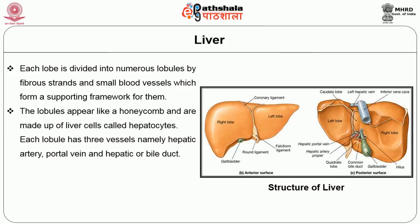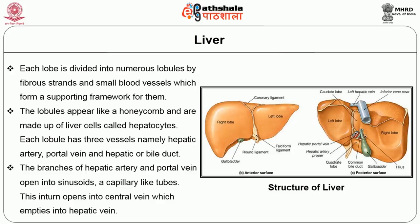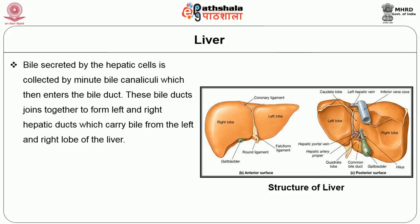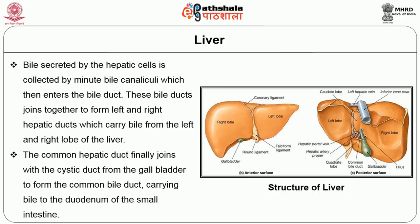The lobules appear like a honeycomb and are made up of liver cells called hepatocytes. Each lobule has three vessels: the hepatic artery, portal vein, and hepatic or bile duct. The branches of the hepatic artery and portal vein open into sinusoid capillary-like tubes, which in turn open into the central vein, which empties into the hepatic vein. The sinusoids in the lobule are lined with reticuloendothelial cells; between these cells, macrophages called Kupffer cells are present, which kill bacteria, worn-out red blood cells, and other particles from the bloodstream. Bile secreted by hepatic cells is collected by bile canaliculi, entering the bile ducts, which join to form left and right hepatic ducts. The common hepatic duct joins with the cystic duct from the gallbladder to form the common bile duct, carrying bile to the duodenum of the small intestine.